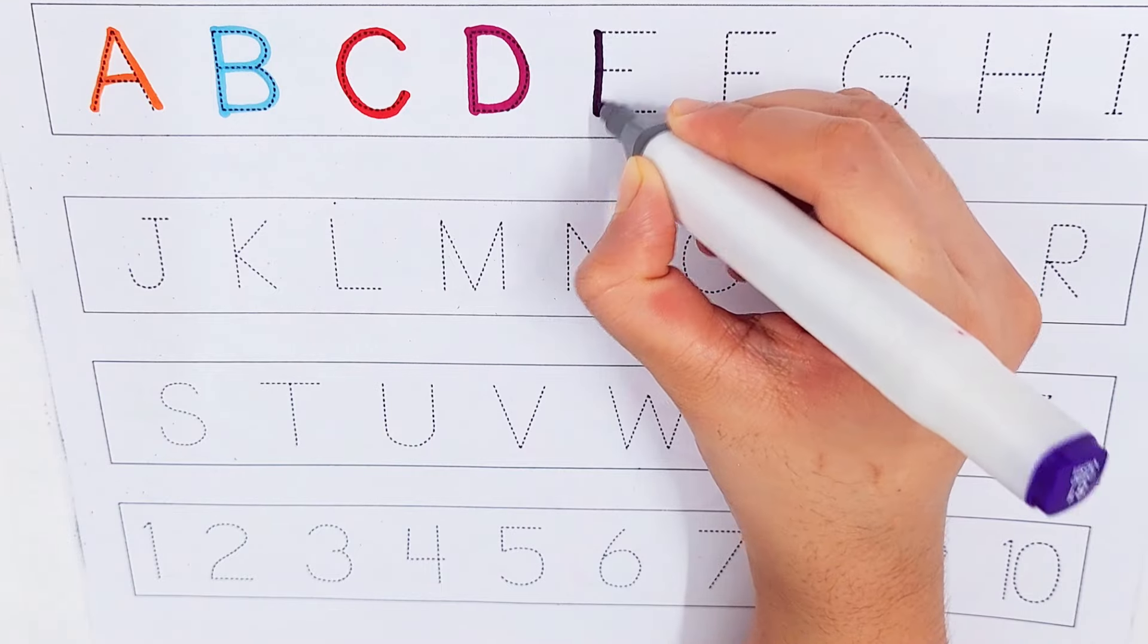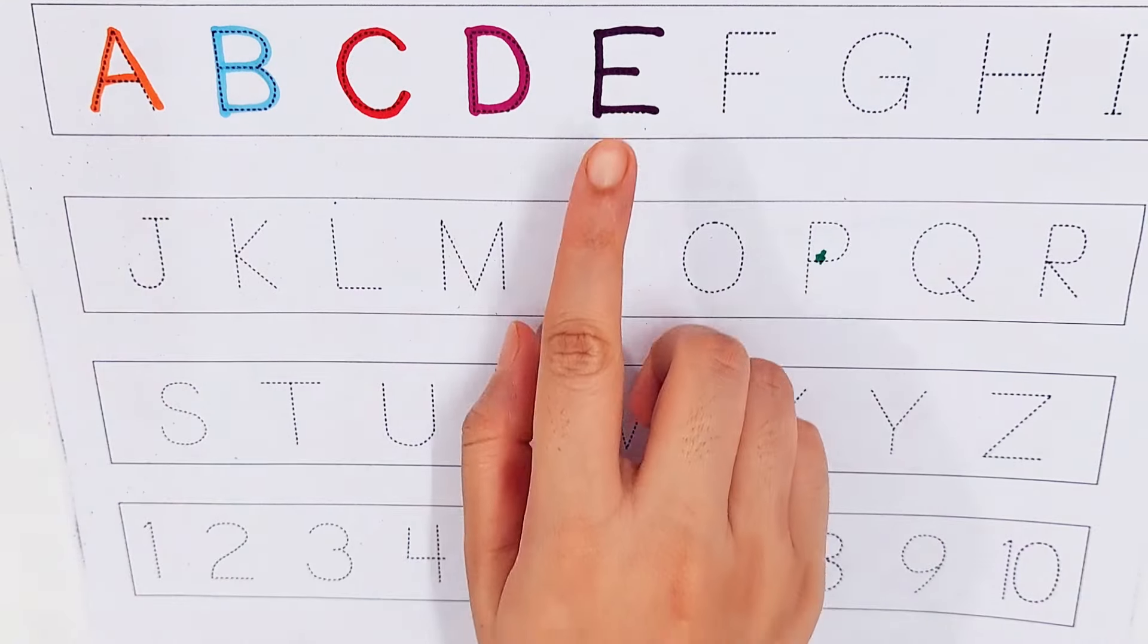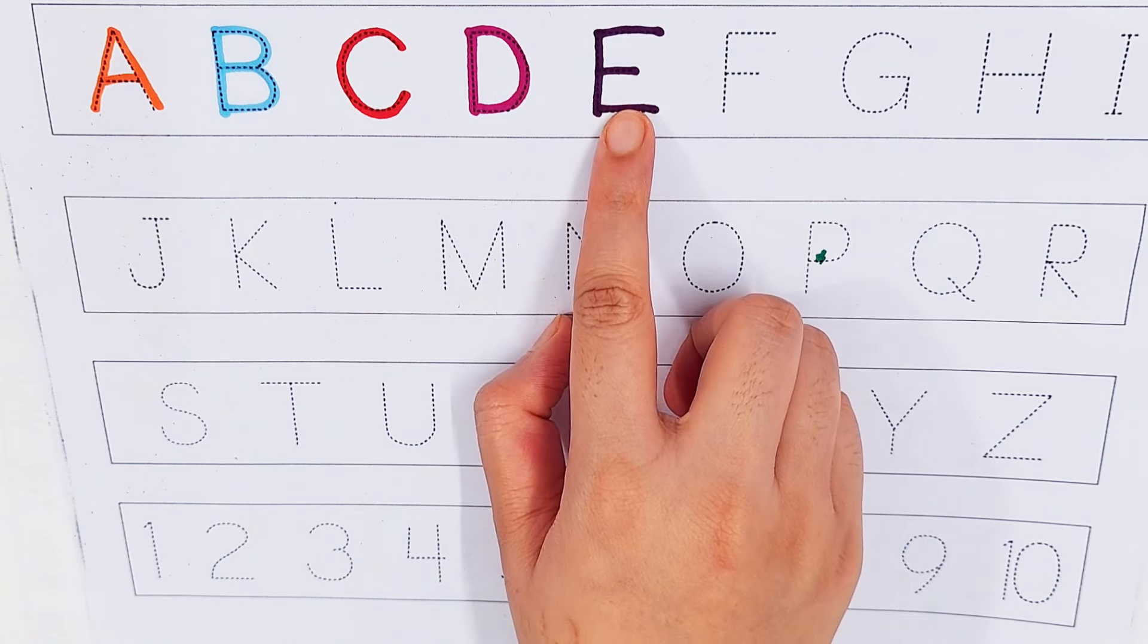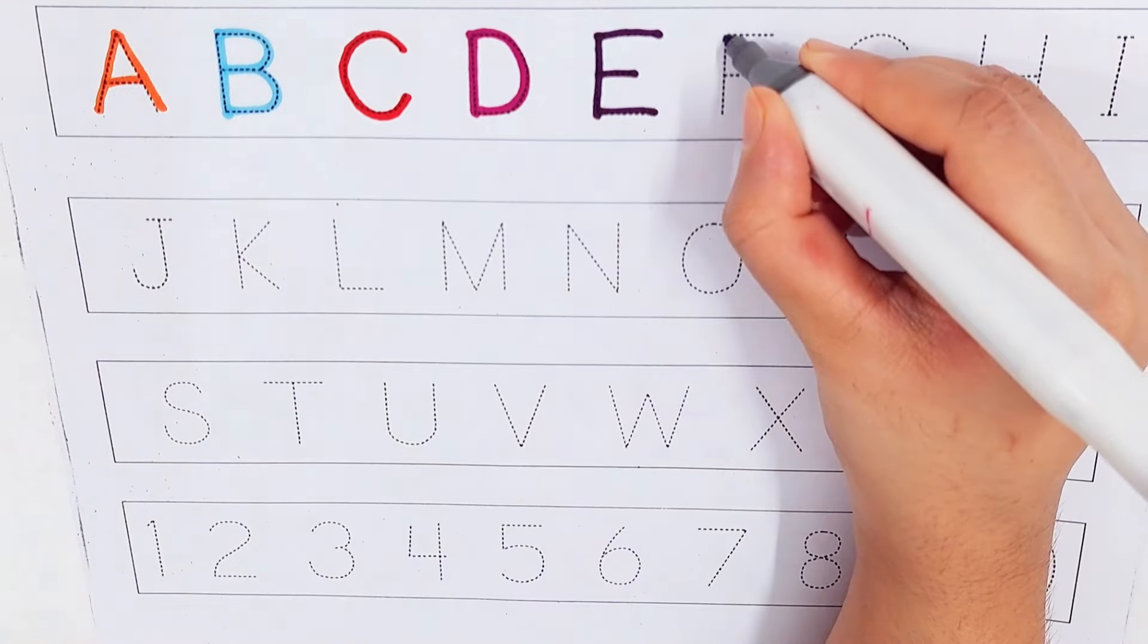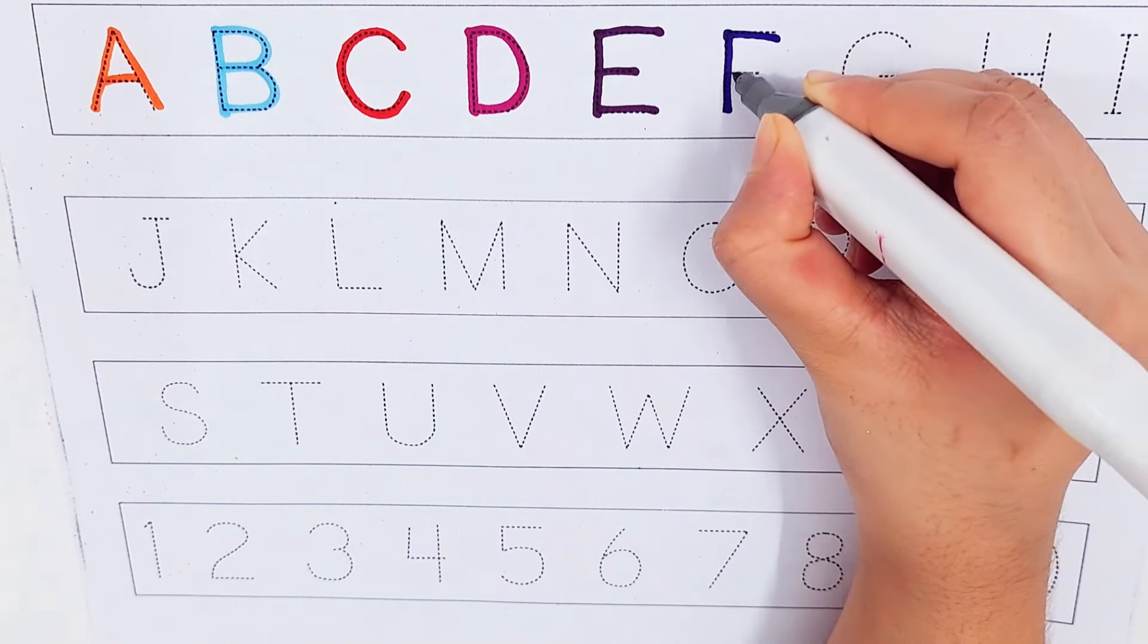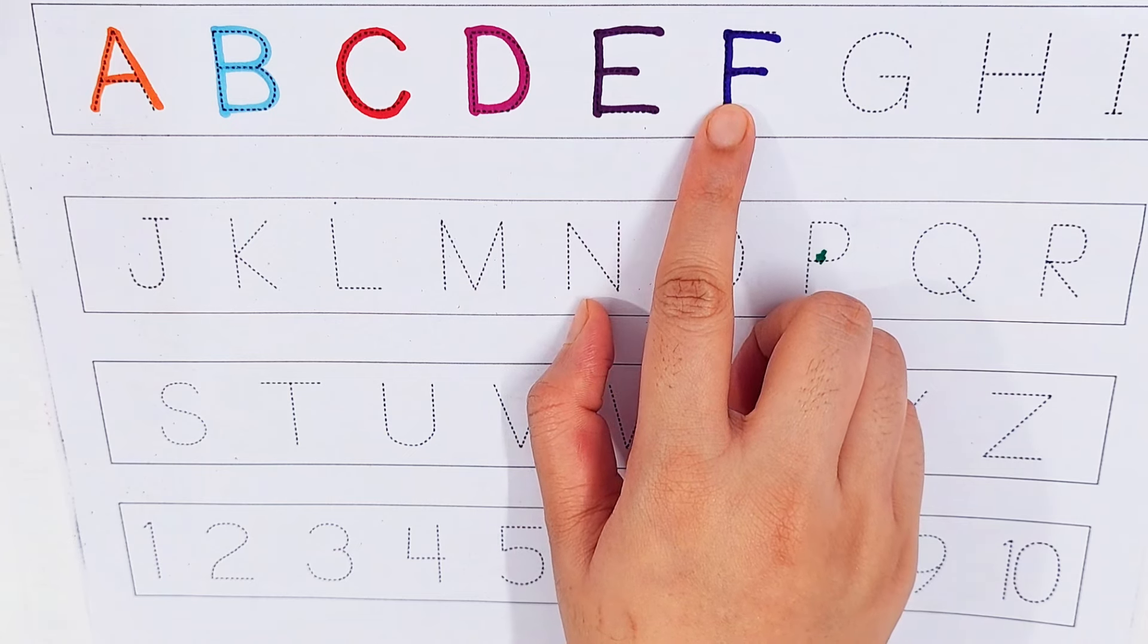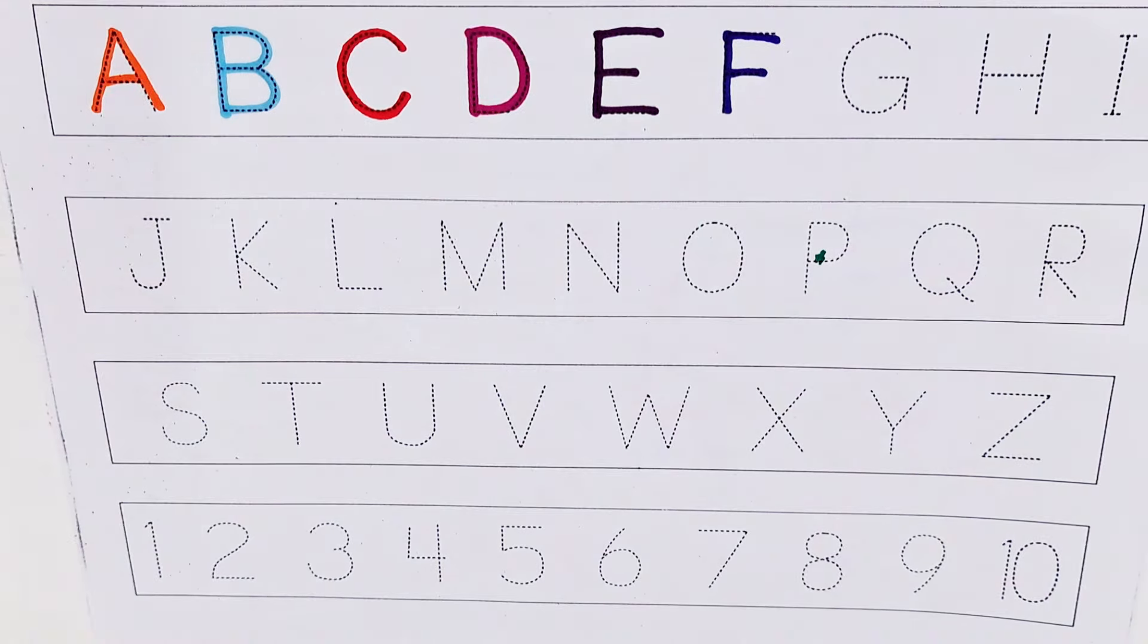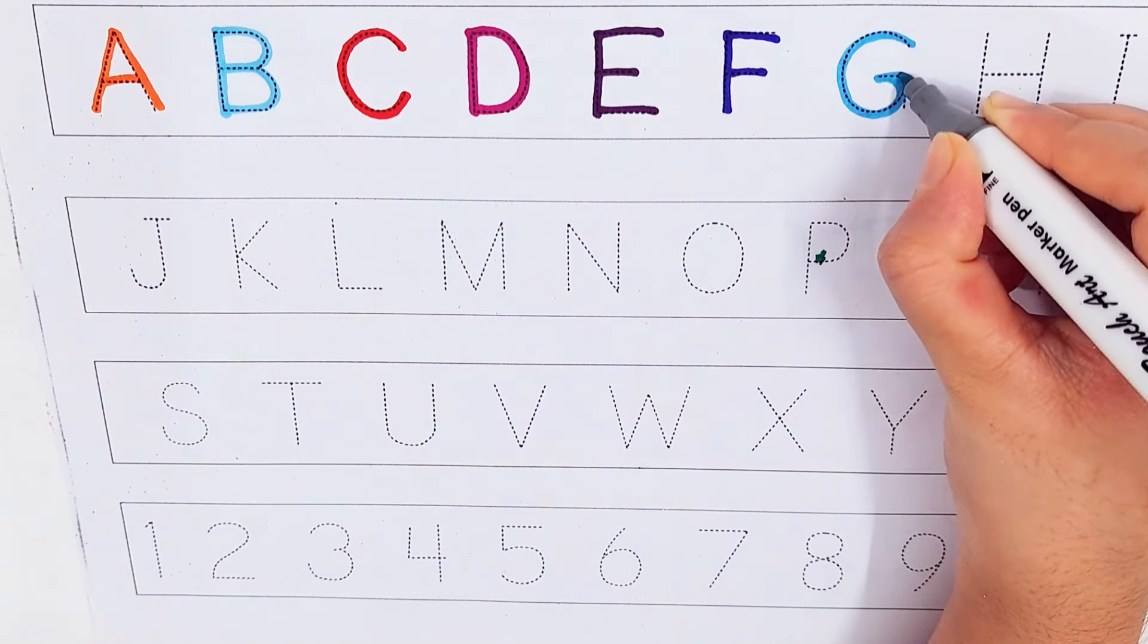D, D for dog, D for doll, D for duck, violet color. E, E for eye, E for ear, E for elephant, dark blue color. F, F for flowers, F for fruits, F for fan, sky blue color.